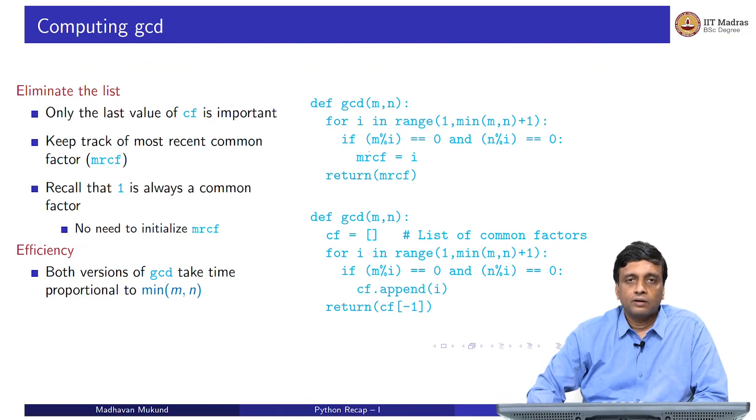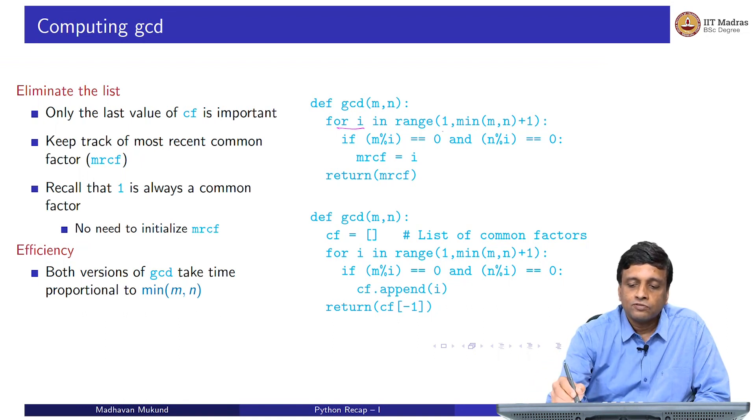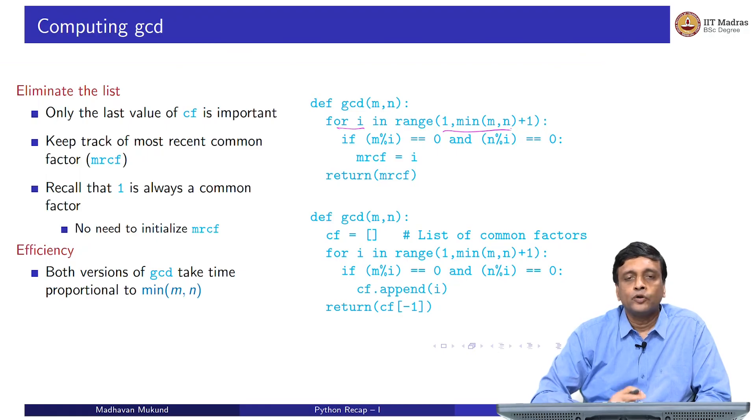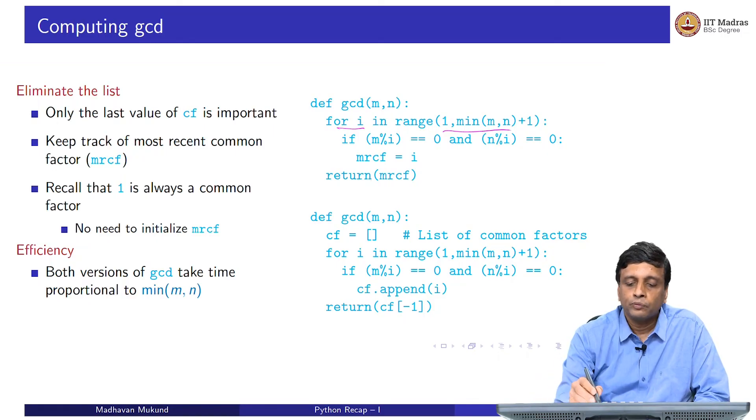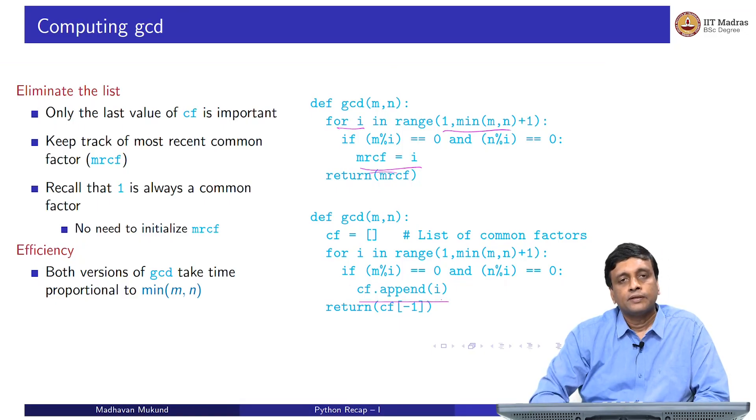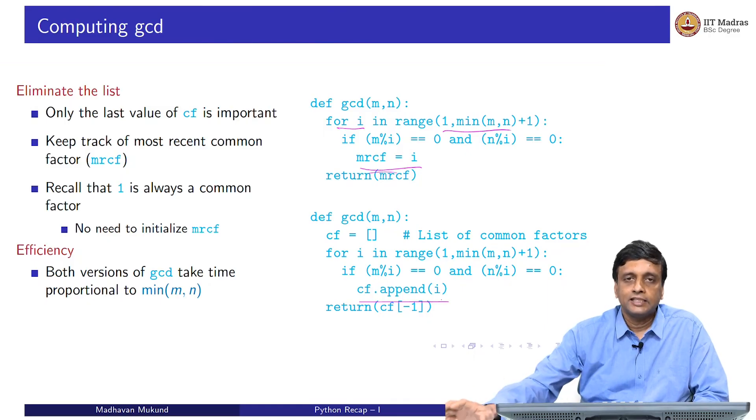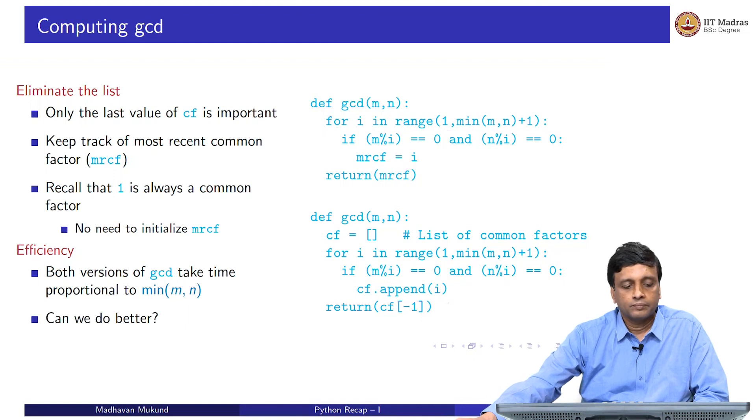How long do these 2 functions take? This is going to be one of the items that we are going to look at in detail in this course, namely how efficient are the algorithms or the pieces of code that we write. As you can see, it has a for loop which runs from 1 to the minimum of m and n. This is going to take time proportional to minimum of m and n because that is how many times this loop is going to execute, whether we do it with a list or whether we do it in this MRCF version. Although we have changed the data structure, in one case, we are keeping track of only the last common factor we found, and in one case, we are keeping track of all the common factors we found. Fundamentally, the time taken does not change, both are proportional to the minimum of m and n. We will see later that we can do much better than this. But for now, let us move on to another example.